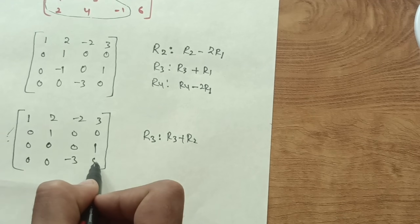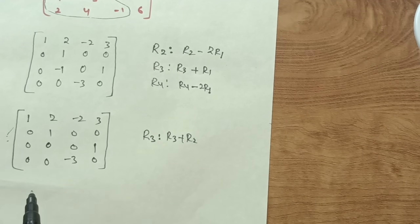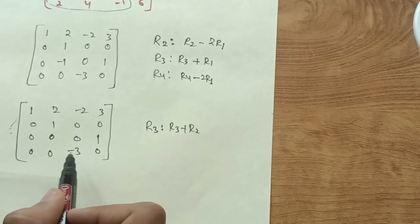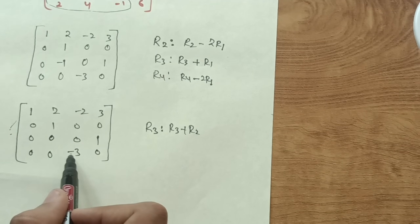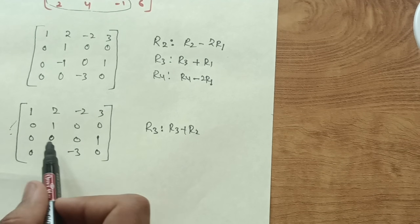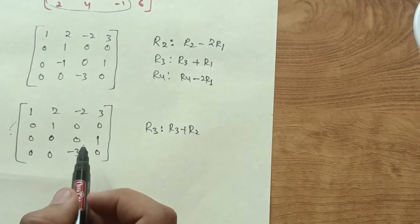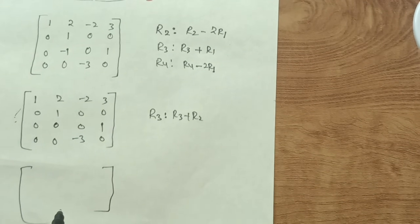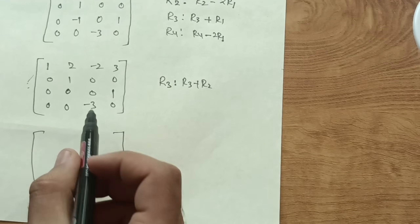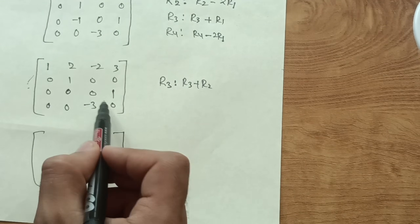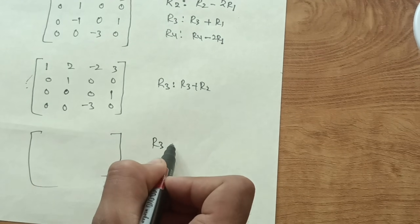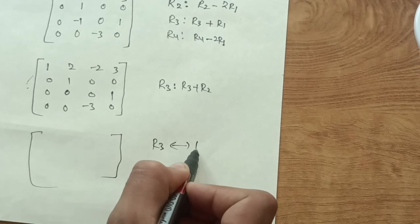Now I interchange rows 3 and 4 to get a better upper triangular form. So I perform R3 ↔ R4, swapping those two rows.